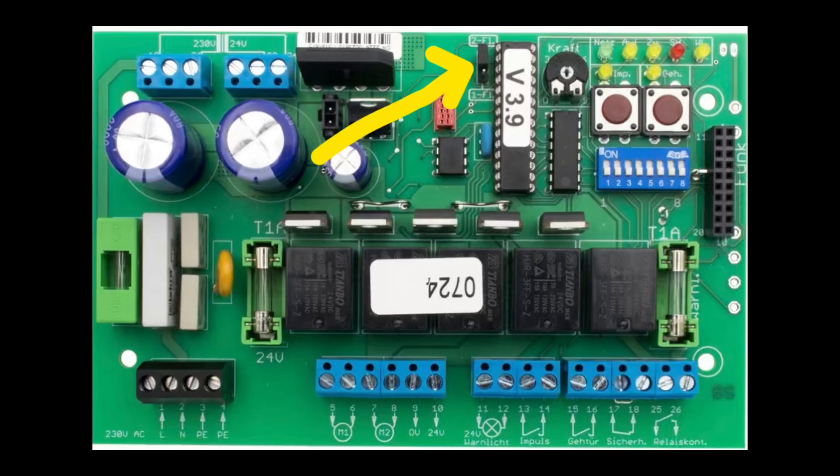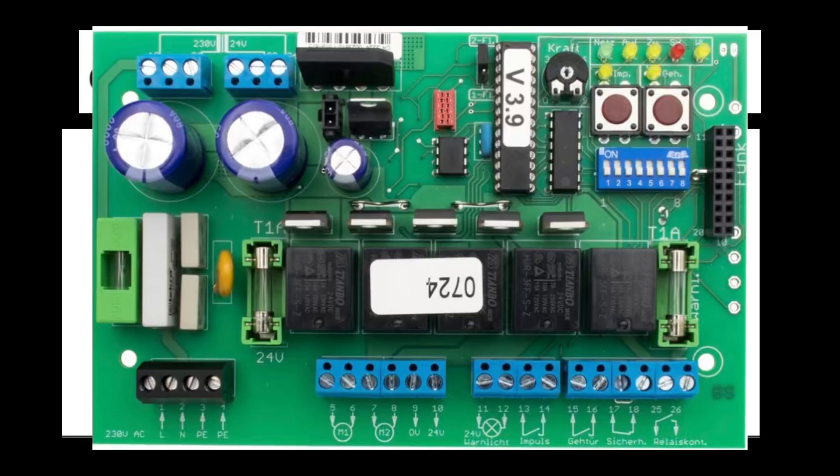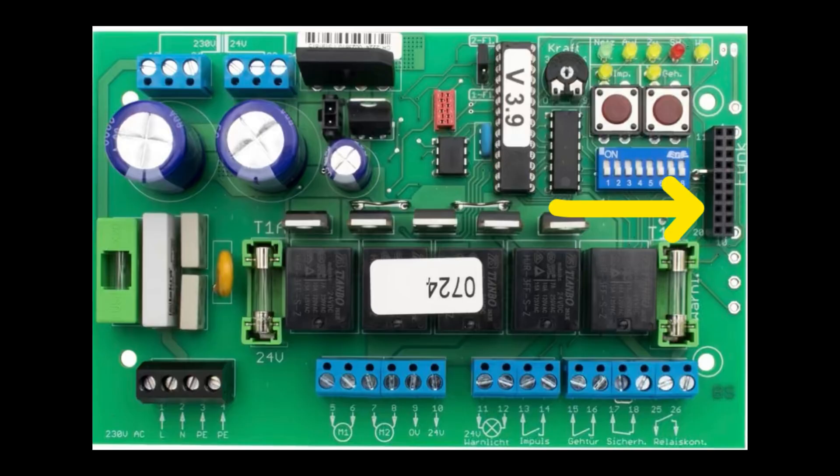Jumper slot. Configuration for one or two-leaf operation. One-leaf operation or two-leaf operation. Radio slot. Terminal for radio module, some have four, mounted at the factory.